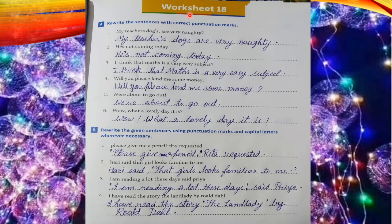Worksheet 18 is based on punctuation marks. The first question is: rewrite the sentences with correct punctuation marks. Sentence 1: 'My teacher's dogs are very naughty.' Write 'teacher's' with an apostrophe sign, and put a full stop at the end. Sentence 2: 'He is not coming today.' This is a contraction form — write 'He's not coming today' with an apostrophe, and put a full stop. Sentence 3: 'I think that maths is a very easy subject.' No comma needed — write it straight with a full stop.